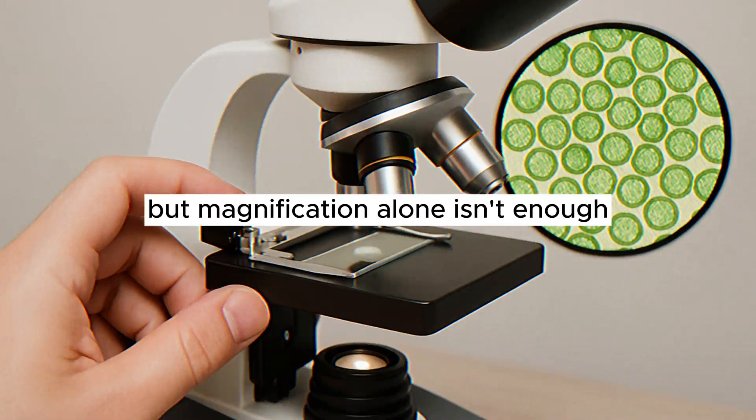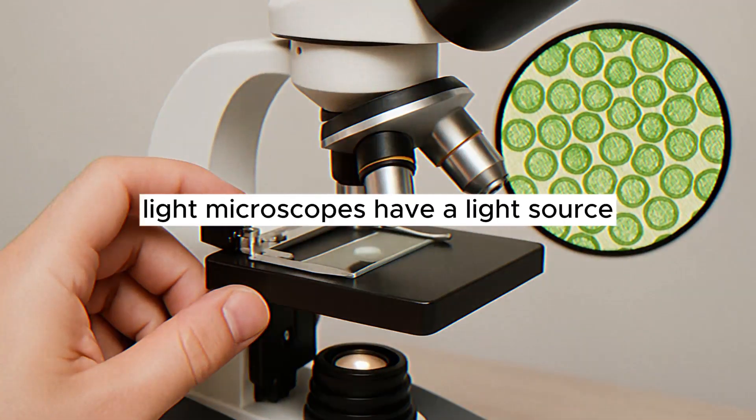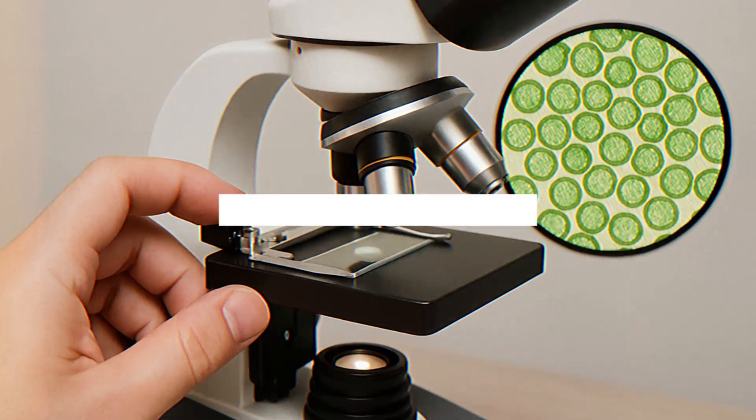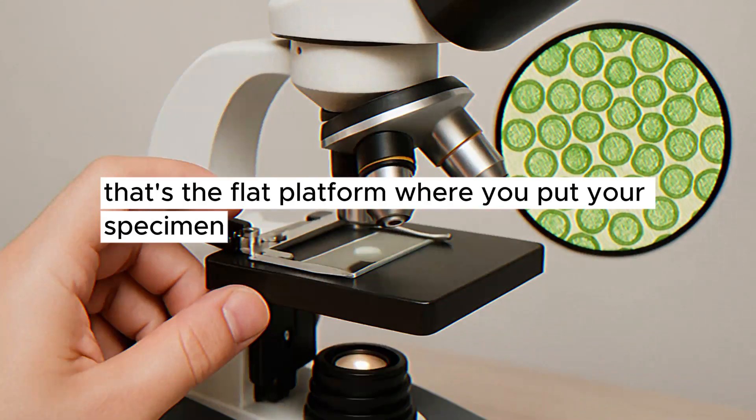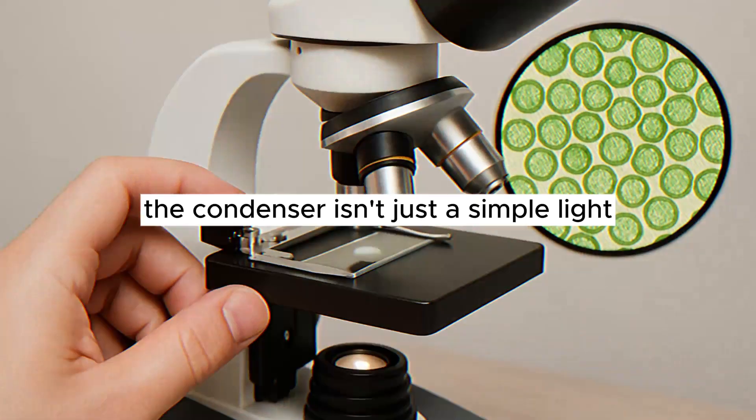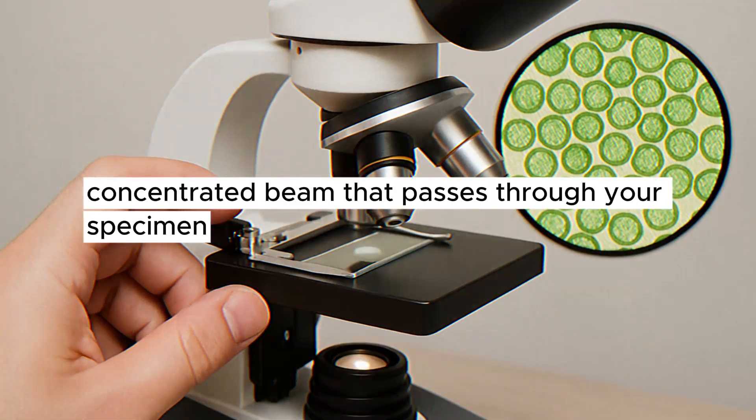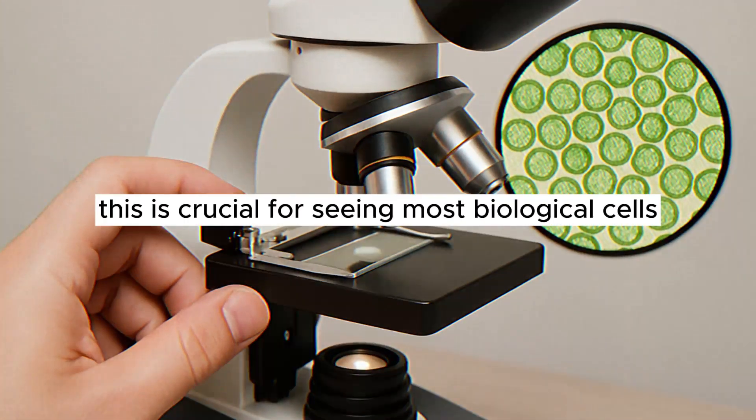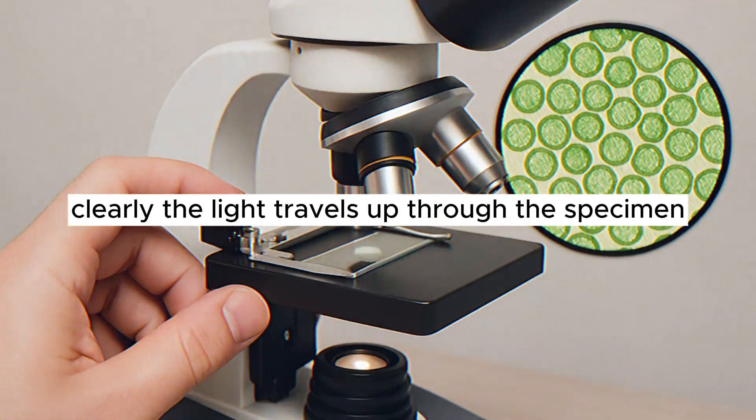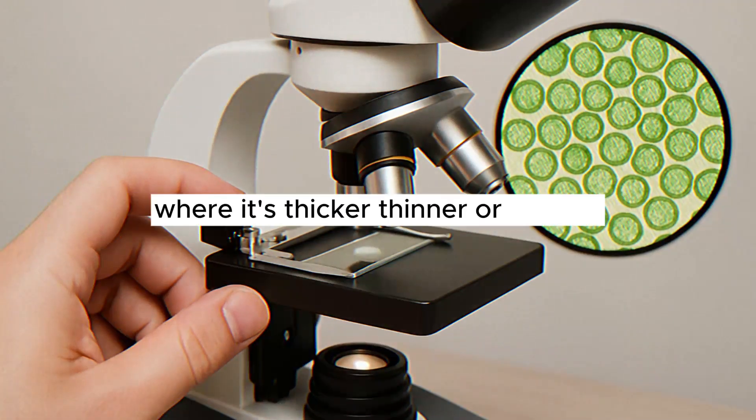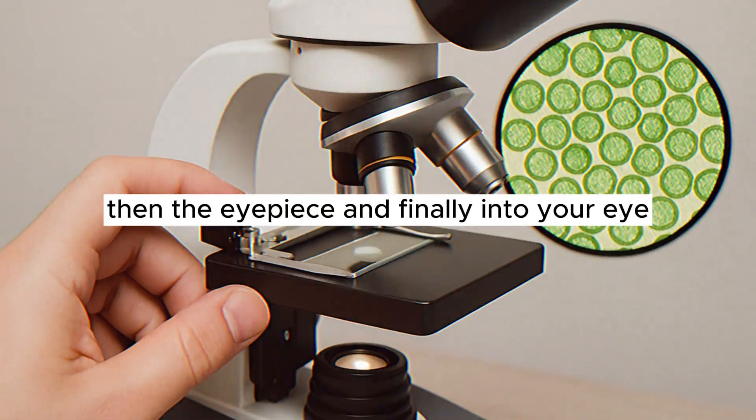But magnification alone isn't enough. You also need light. That's why compound light microscopes have a light source, usually a small lamp built into the base. This light shines upwards. Below the stage, that's the flat platform where you put your specimen, there's a condenser. The condenser isn't just a simple light. It's a special lens system that focuses the light into a bright, concentrated beam that passes through your specimen. This is crucial for seeing most biological cells clearly. The light travels up through the specimen, carrying information about its structure, where it's thicker, thinner, or stained, then through the objective lens, then the eyepiece, and finally into your eye.